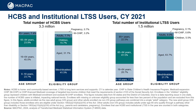On this slide, we highlight the age and eligibility group distribution among Medicaid and CHIP enrollees who used HCBS and/or institutional LTSS in calendar year 2021. Most HCBS users were adults, with 45% between ages 19 and 64 years old and a little over 30% aged 65 or older. However, almost a quarter of HCBS users were children between 0 and 18 years old. Over 70% of HCBS users were in the aged or blind or disabled eligibility groups. Among institutional LTSS users, over 60% were 65 years or older, with a greater share aged 85 or older, and the largest share were in the aged group at 63.7%.